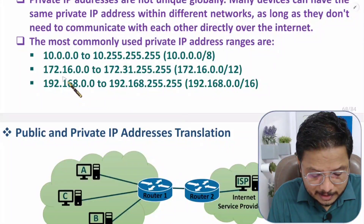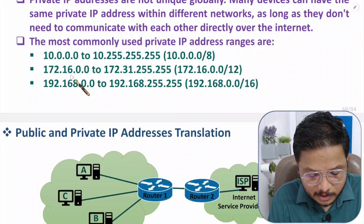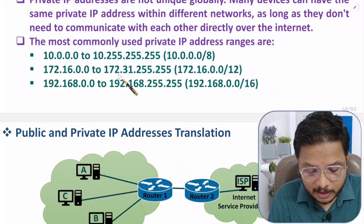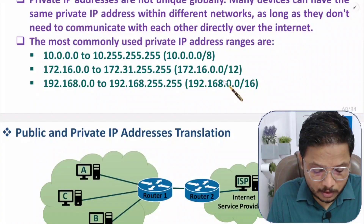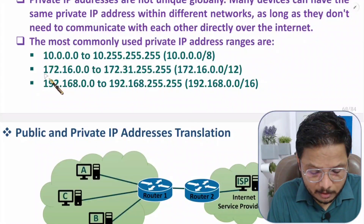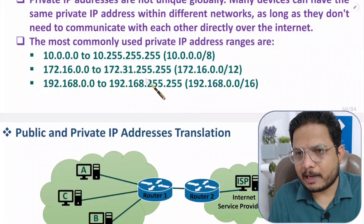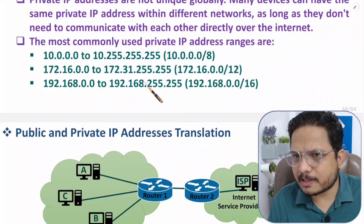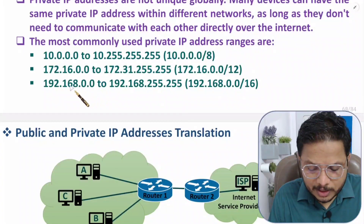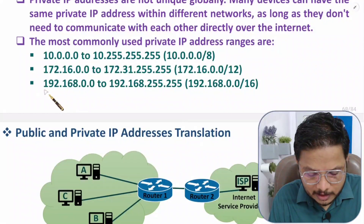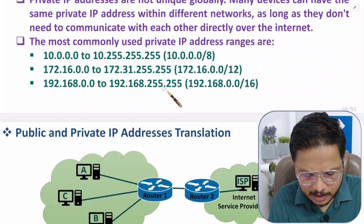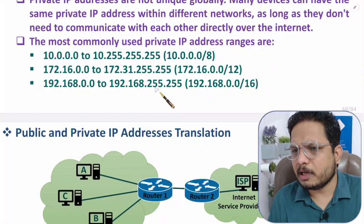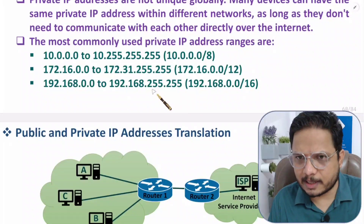The second private IP range is 172.16.0.0 to 172.31.255.255, with a mask size of 12 bits. You can calculate how many IPs are available based on the mask. This is the range used in most cases — the majority of people, including my own private IP, fall within this range.